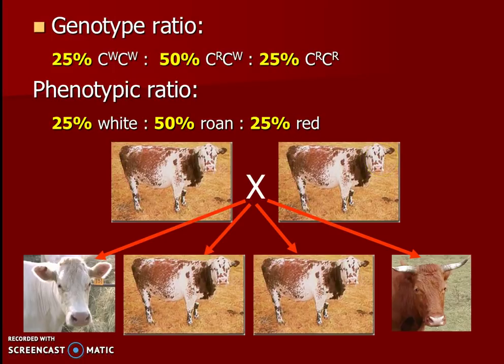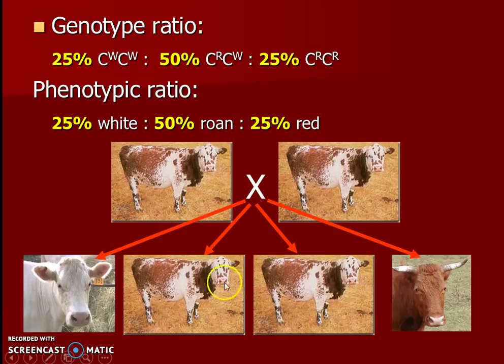Wonderful job! We're going to practice the difference between incomplete and codominance in class. Just remember: incomplete dominance was a blend — not always pink, but it's a blend. Codominance is when you can see both options present. We'll practice a lot together. Bye!